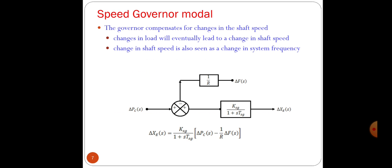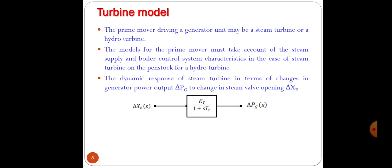The turbine model: the model of the speed governing system assumes that system is initially operating under steady conditions, the linkage mechanism stationary and pilot valve closed, steam valve opened by a defined magnitude. The model for the prime mover must take account of the steam supply and boiler control system characteristics in the case of steam turbine or the penstock for a hydro turbine. Turbine running at constant speed with turbine power output balancing the generator load.